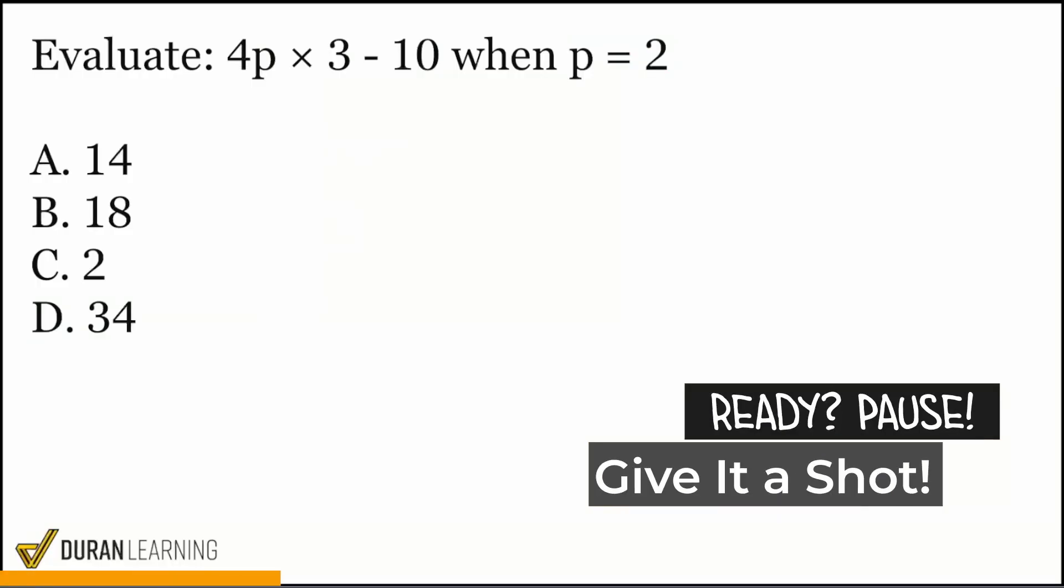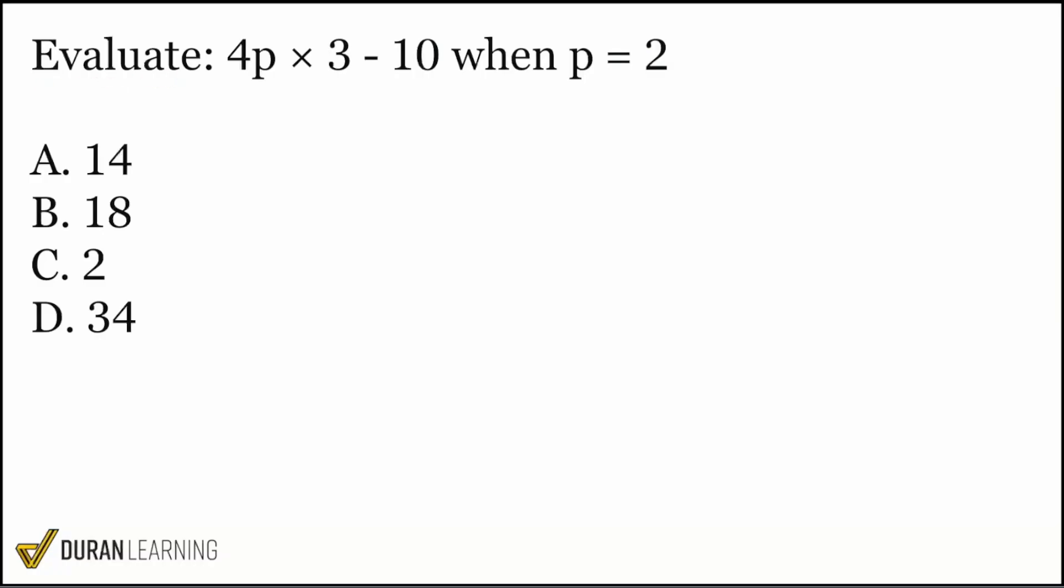And let's try this next one out. So the question states to evaluate 4p times 3 minus 10 when p equals 2. Sounds good. So what we'll do, as always, when it comes to evaluating expressions, is we'll plug in p as 2, and then we'll evaluate from there. So we have 4p, which is the same as 4 times p, which will be 2. And then we have times 3 right after, right there. Then we'll subtract 10. And now it's time to evaluate.